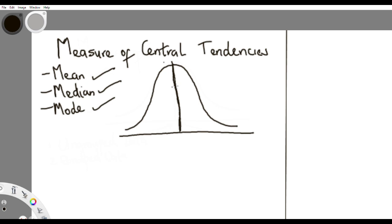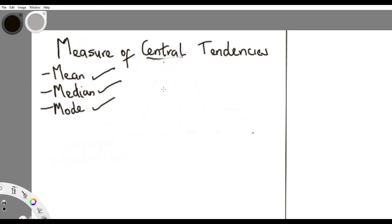If you have a distribution and you're trying to get the value that falls at the center, you use measures of central tendency — that is, the operations that get the value tending towards the center of the distribution. We're not going deeply into what it means; we want to go straight into the calculation. The first one is the mean.